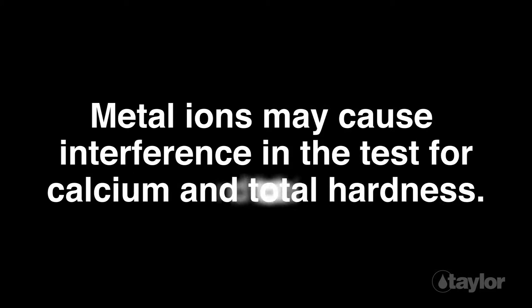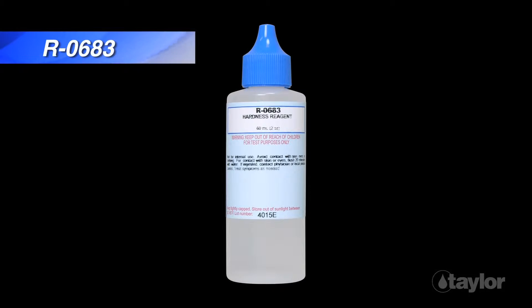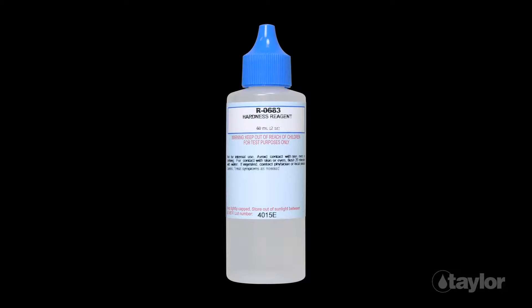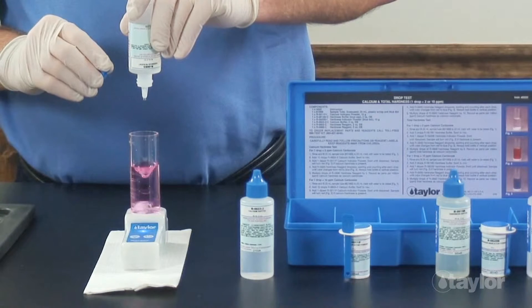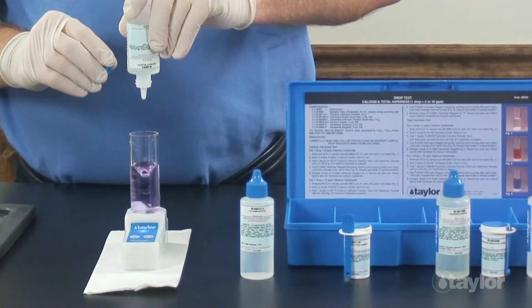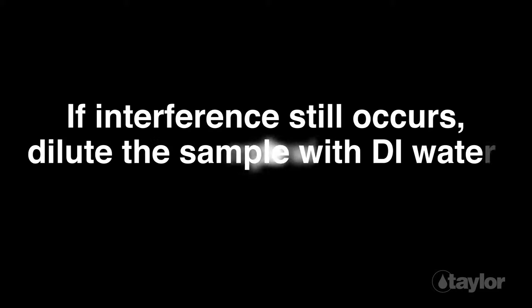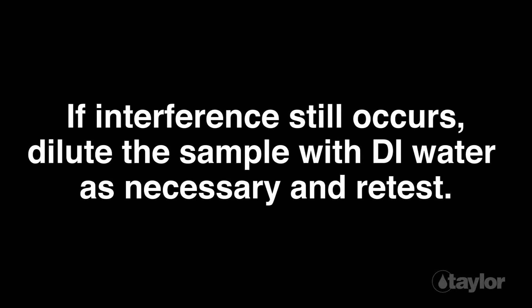Metal ions may cause interference in the test for calcium and total hardness. If your sample reaches a blue endpoint but then slowly reverts to red, this is an indication that metals are present. To prevent this interference, add two or three drops of hardness reagent, which contains EDTA, to your sample before adding the buffer and indicator, then test as normal, making sure to count those initial drops in the total required to reach the endpoint. If interference still occurs, dilute the sample with DI water as necessary and retest.